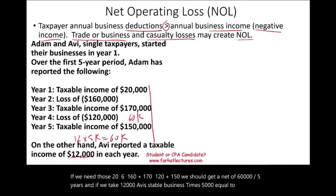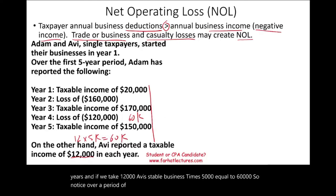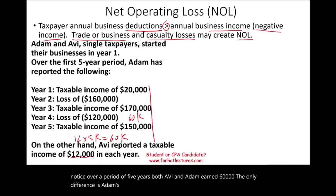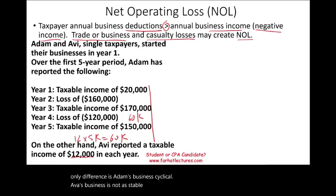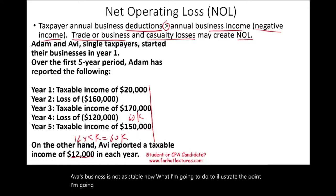So notice: over a period of five years, both Avi and Adam earned $60,000 net. The only difference is that Adam's business is cyclical, while Avi's business is stable. To illustrate the point, I'm going to use the 2022 tax rate for a single taxpayer to compute their taxes, and this is what we come up with.